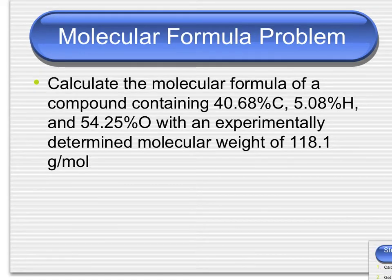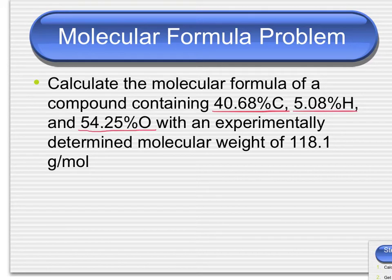Let's practice. We're going to find the molecular formula of a compound. We're given its percent composition: 40.68% carbon, 5.08% hydrogen, and 54.25% oxygen. It has an experimentally determined molecular weight of 118.1 grams per mole. That's the given molecular weight we'll use in step three.